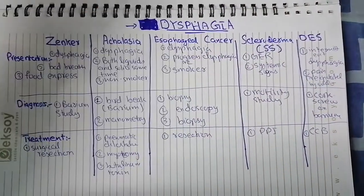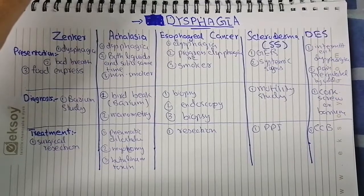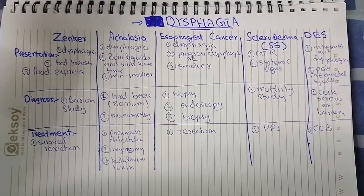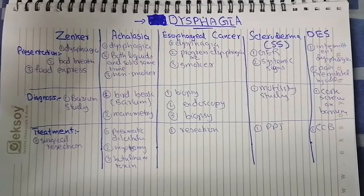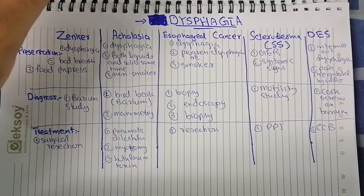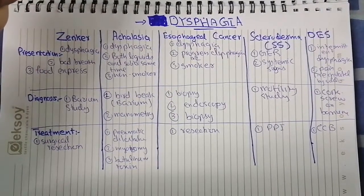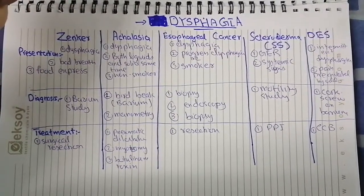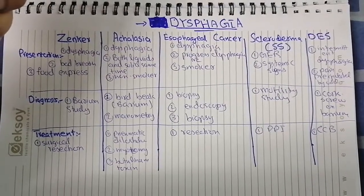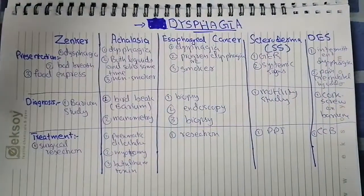Moving forward to scleroderma: scleroderma is a systemic disease. You will identify it when, in addition to dysphagia, the patient has other systemic signs — that is most likely scleroderma. It also presents with GERD-like symptoms such as substernal chest pain and burning sensations.